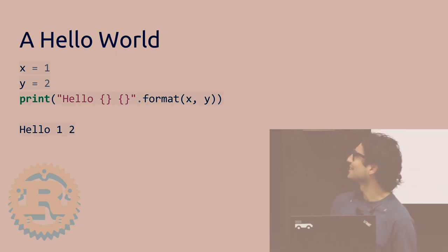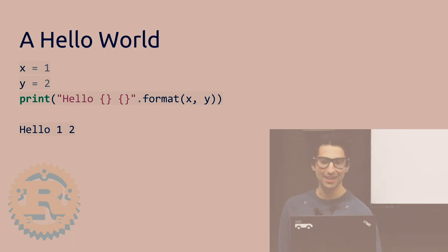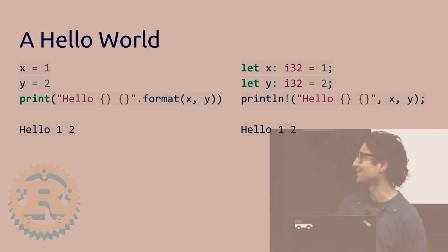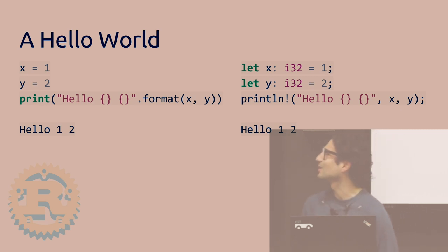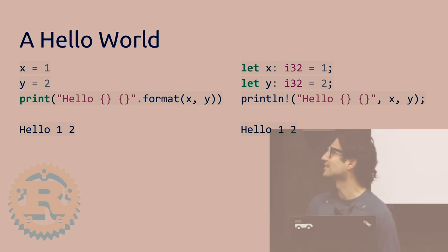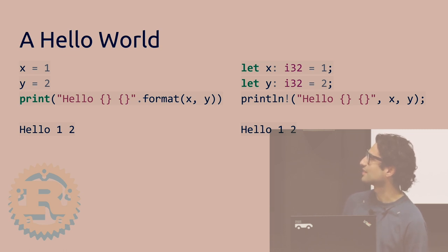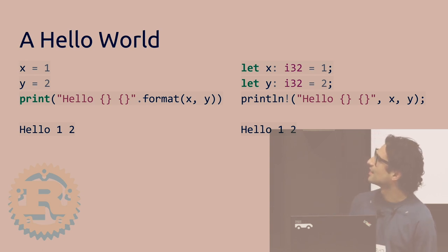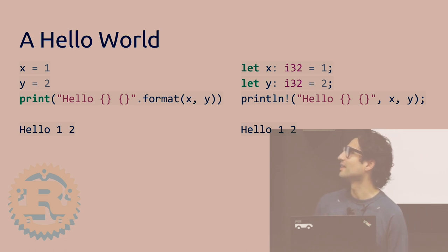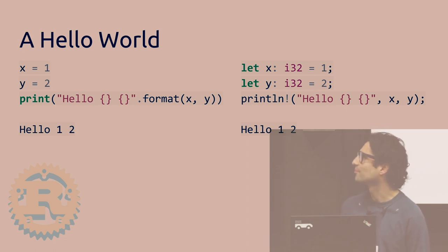So you have .format with x and y. Now this is the Rust version. Since it's a low-level language, you have to explicitly say what type of integer it is — it's a 32-bit integer, which is just a range of values. You also notice the brackets are similar, except that instead of .format, it's comma-separated. The colon basically tells you what type it is, so x is an integer.